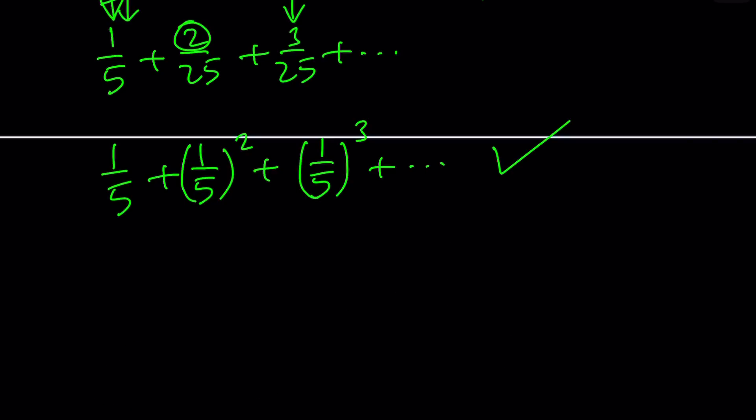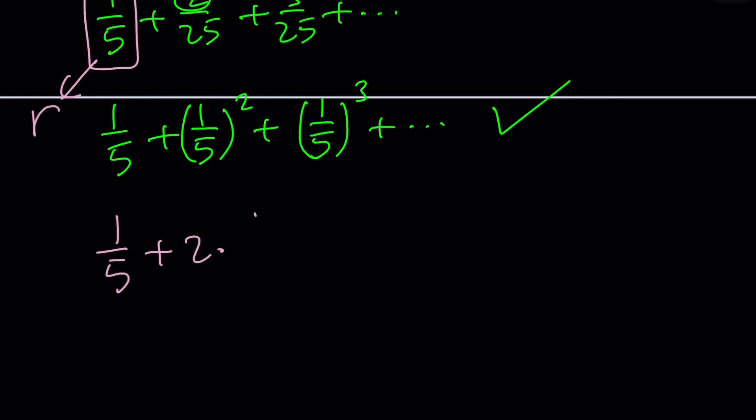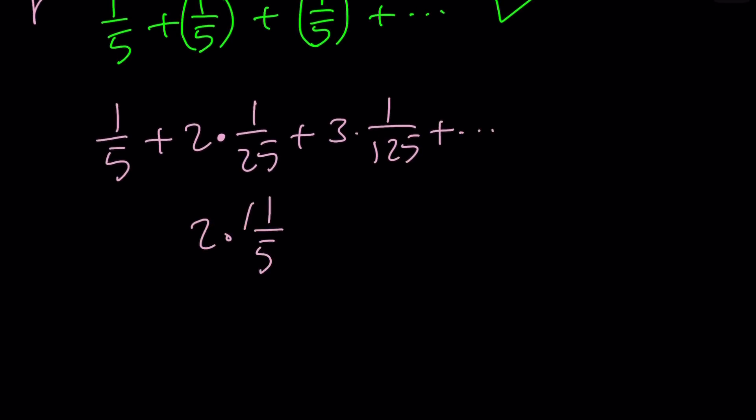We're going to go ahead and replace this with r. We can use x, we can use r, it doesn't matter. And then the second term is going to be, if you think about it, 2 times 1 over 25. And the third one is 3 times 1 over 125. So there is a relationship between the number that multiplies the r, or r squared, or r cubed, and the power of r in the same term. It's not a coincidence that these numbers are the same. I can always write this as 1 times 1 over 5, which is usually not written, but it's hidden.